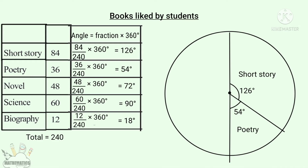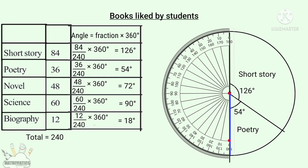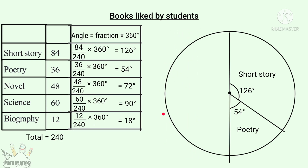The second segment is Novel — it is a 72-degree angle. We use the protractor at 0 and measure: 0, 20, 40, 60, 70, 72. This segment is Novel. The next segment is Science — it is a 90-degree angle. Using the protractor at 0: 0, 20, 40, 80, 90. This segment is Science.